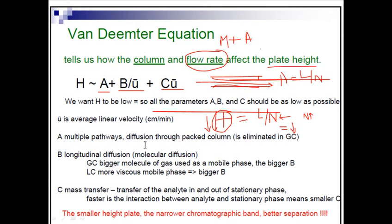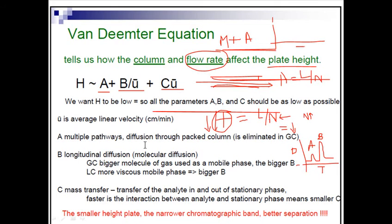Let's think about how the flow rate can affect separation using a graph. Here the injection begins, and we can observe the first peak. After some time we observe the peak for component A of the analyte, and then component B, separated according to time. If we change the flow rate, the detector may not be able to identify when the separation is actually taking place, so in most cases the peaks will overlap and are not separated as distinct peaks.